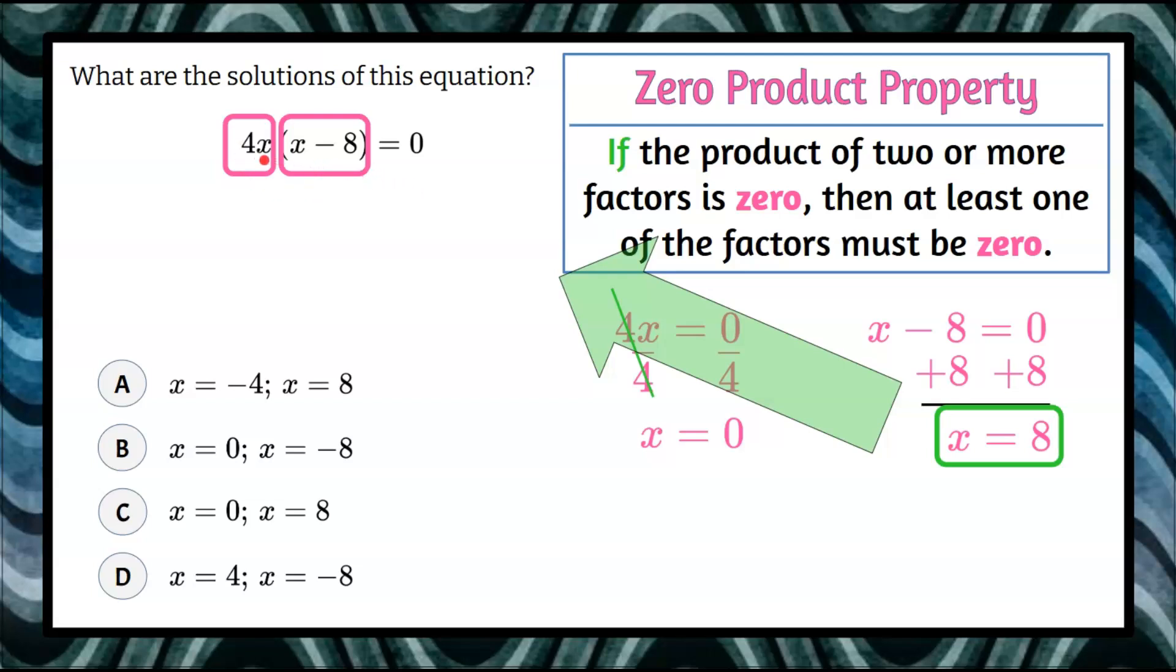Let's rewrite this, replacing the x's with 8's. 4 times 8, and then 8 minus 8. 4 times 8 multiplied by the quantity x minus 8, with x being 8.